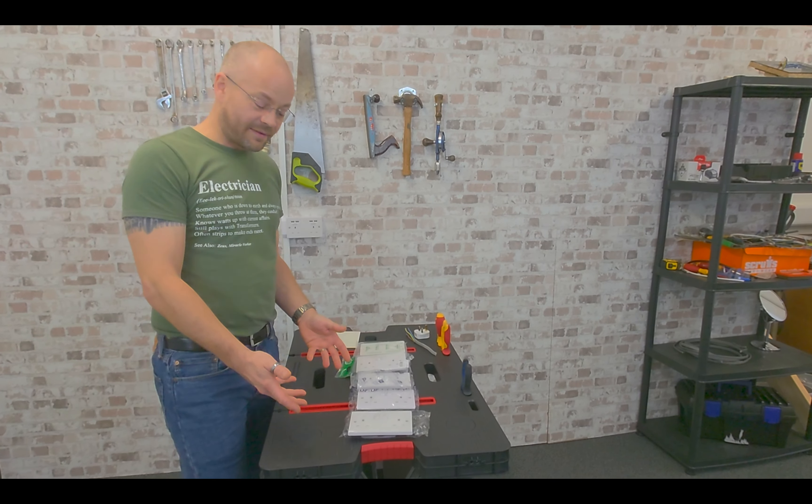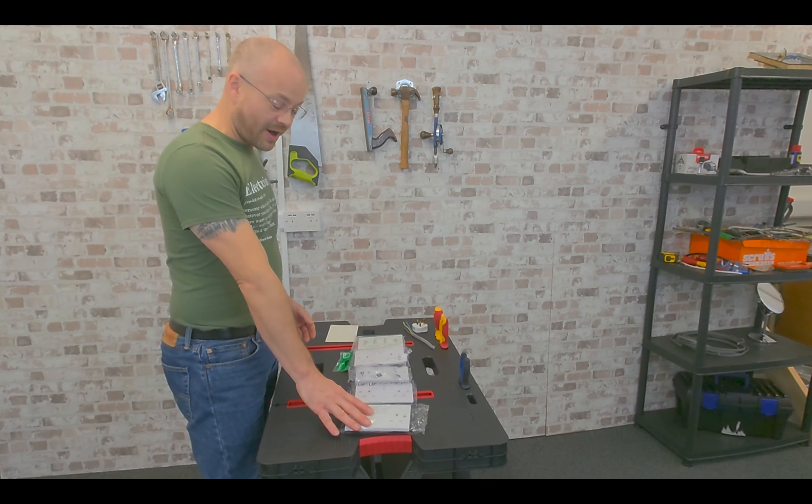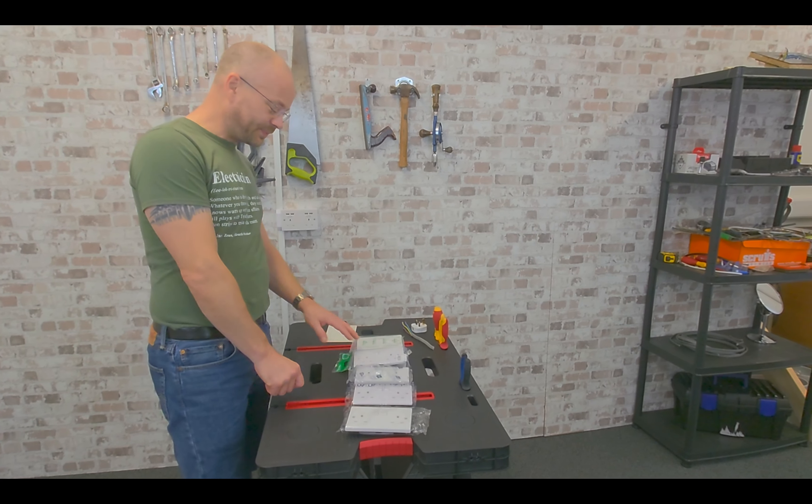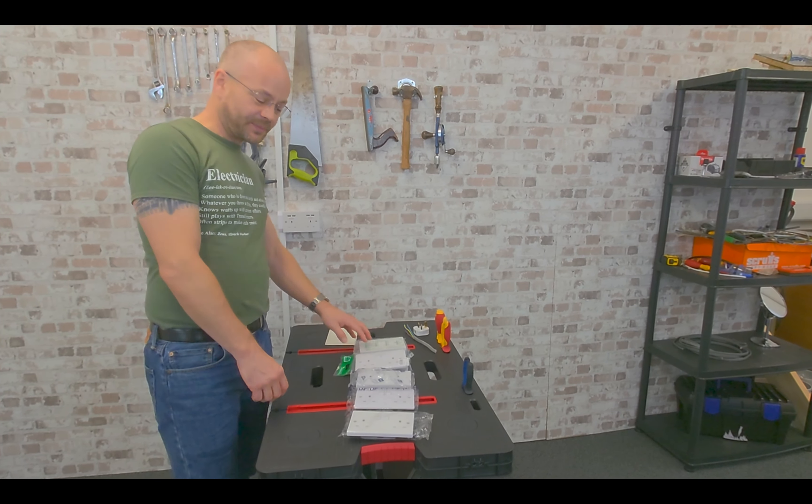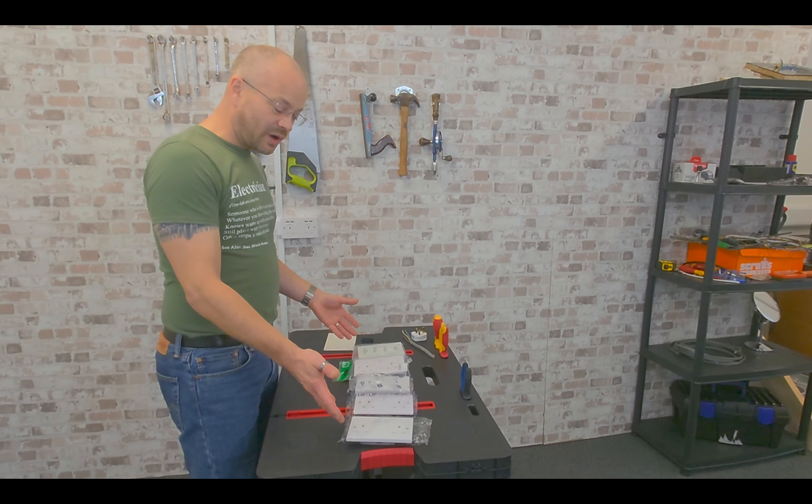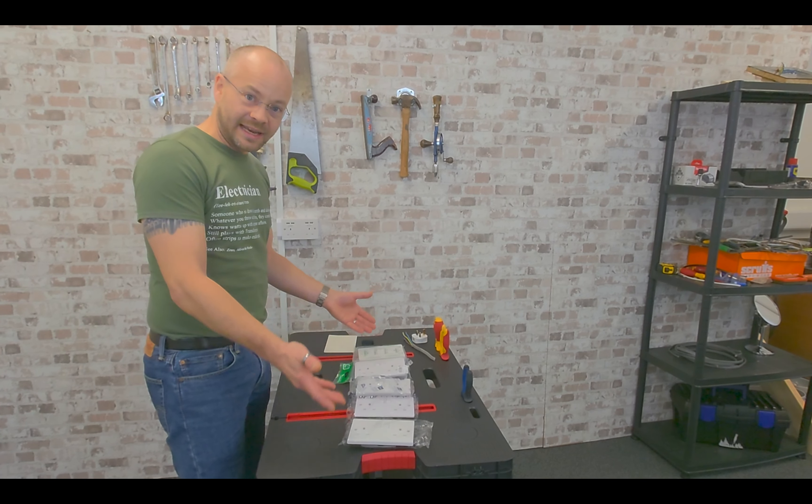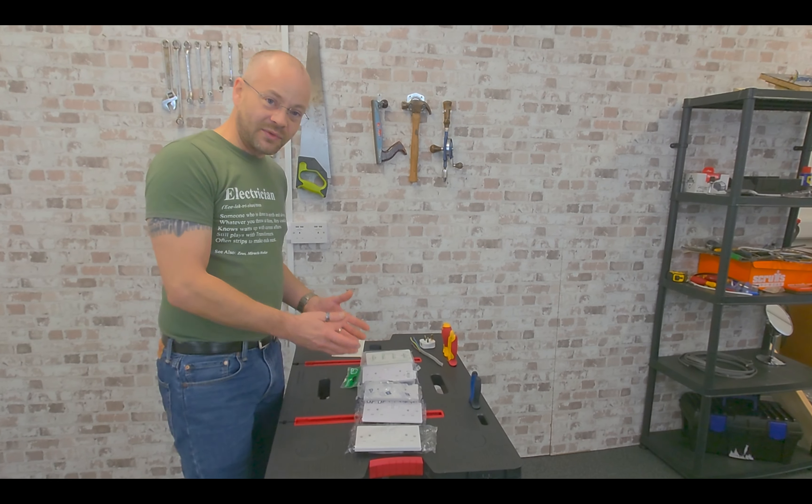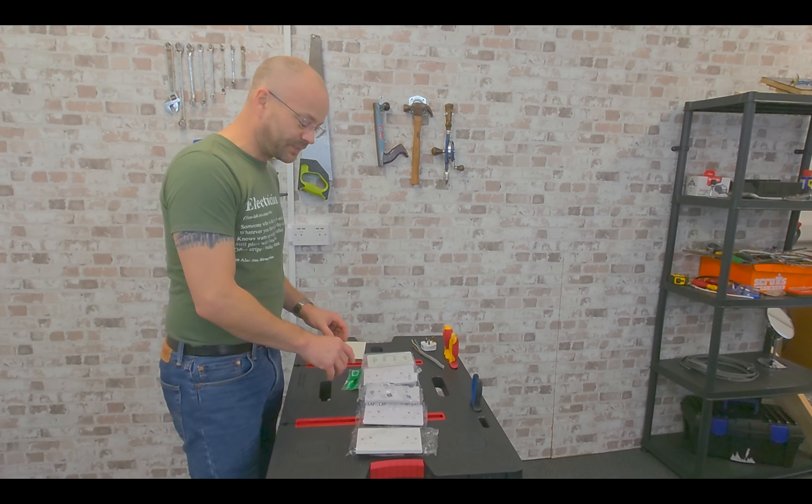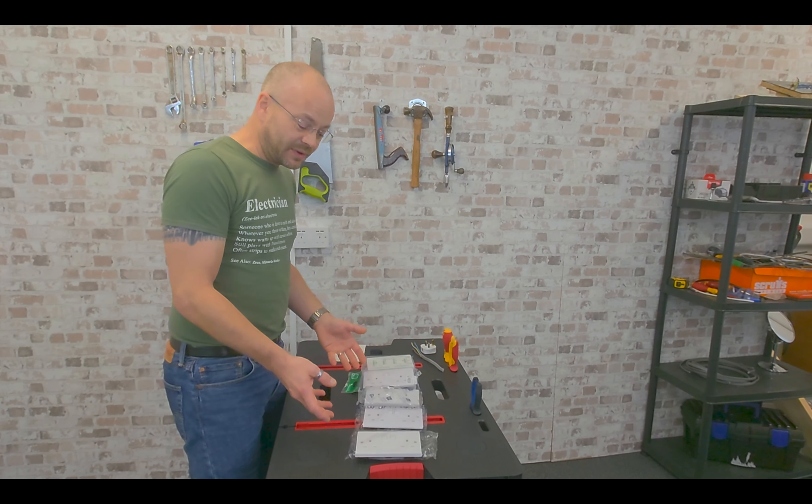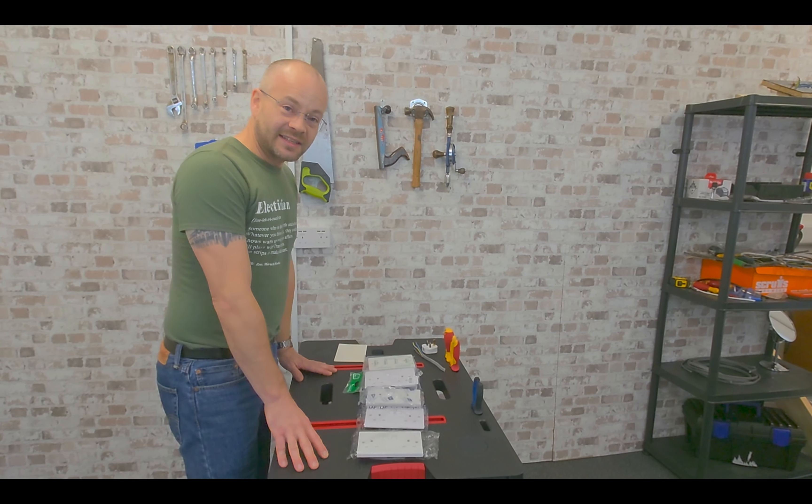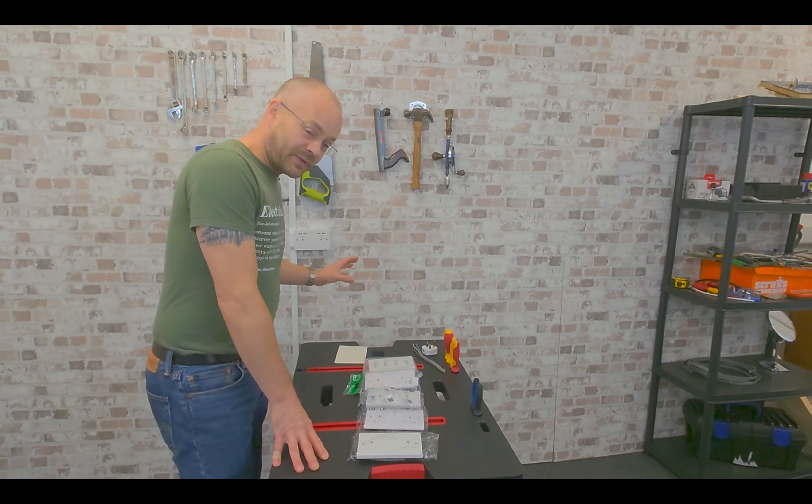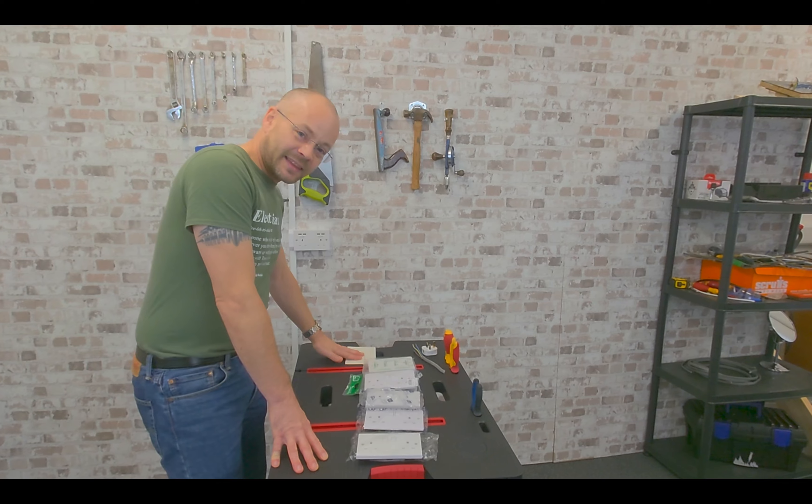So the five double sockets I have here range from unbranded, Lapp, British General, Schneider, and Crabtree. Now I'll put these in an order of how I feel the quality level is, starting with the unbranded at the bottom through to Crabtree at the top, but not necessarily in price order. So let's get the packets open, let's look at them in more detail, and let's see whether the prices actually match the quality. We'll find out what the prices are at the end.